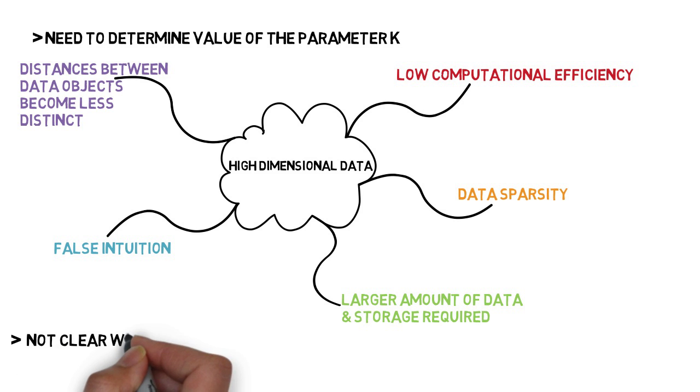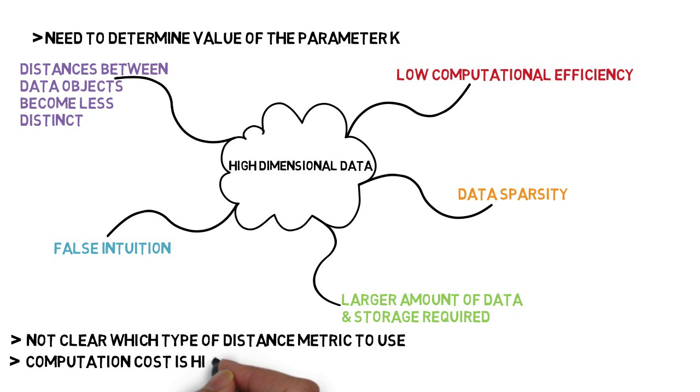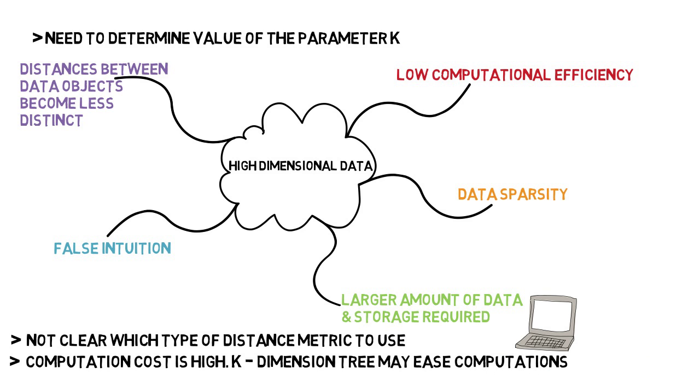Distance based learning is not clear on which type of distance to use and which attribute to use to produce the best results. The computational cost is quite high because we need to compute the distance of each query instance to all training samples. K-dimensional trees may also help ease computations of nearest neighbor searches.